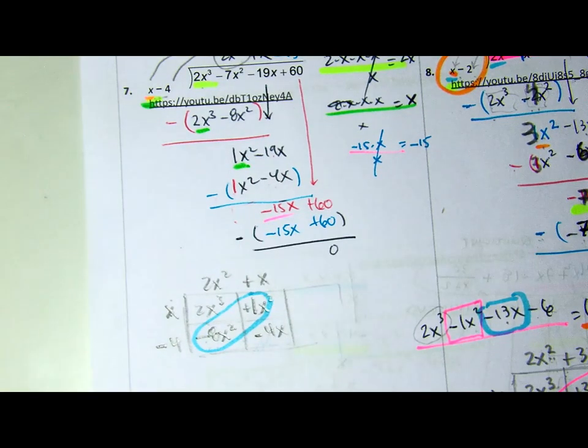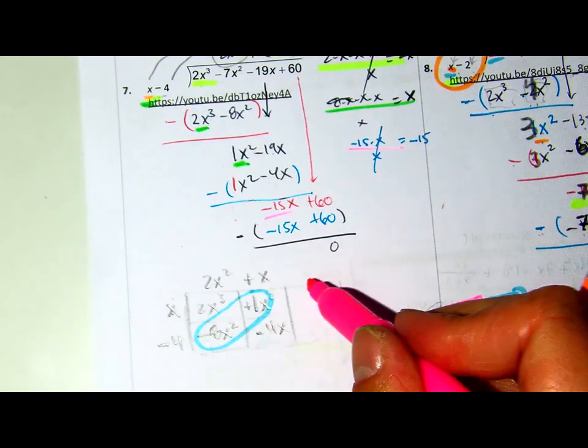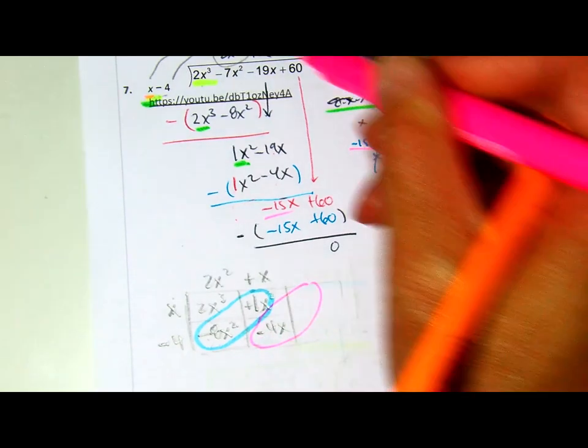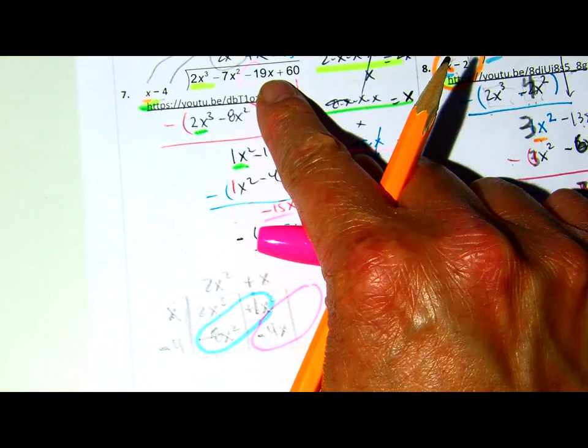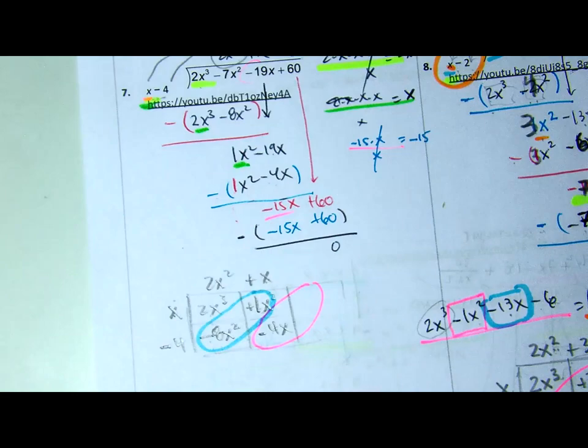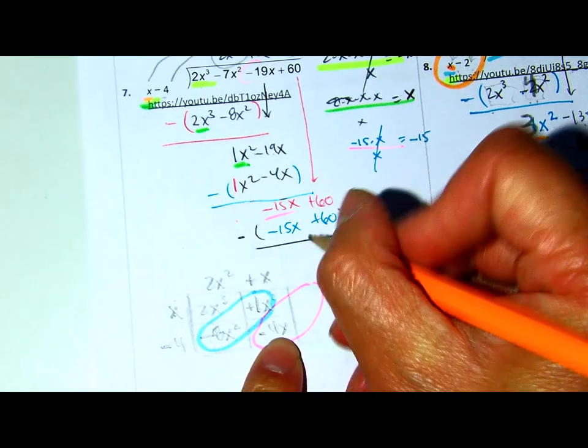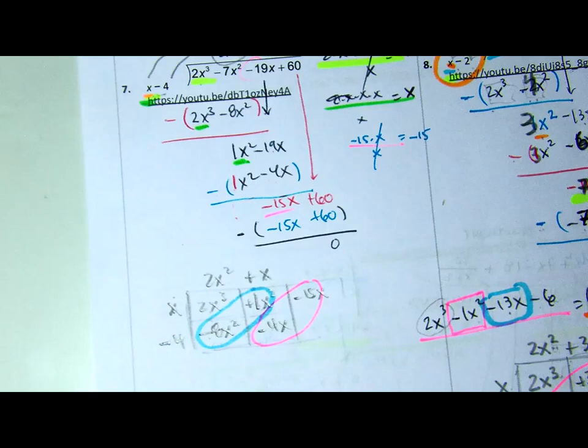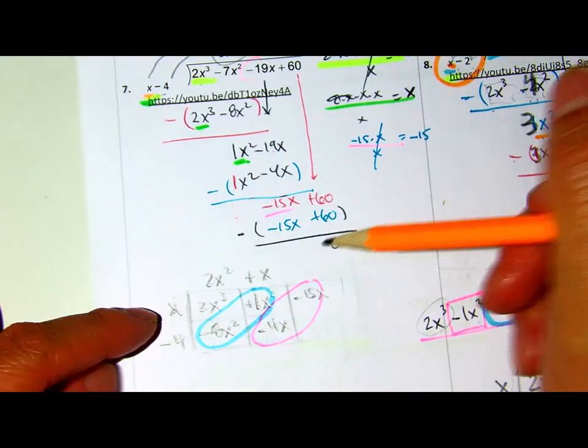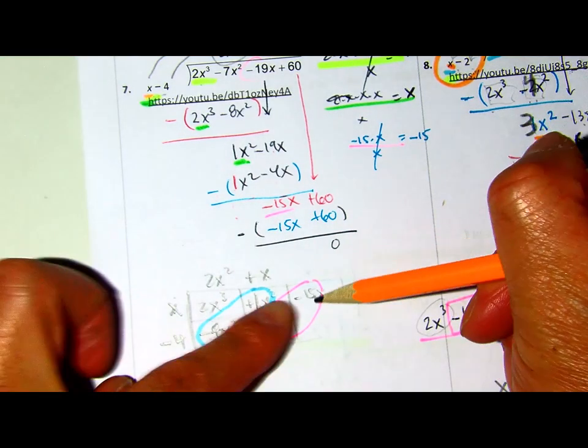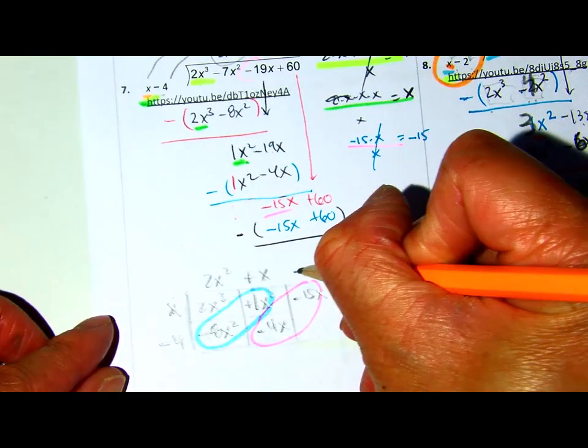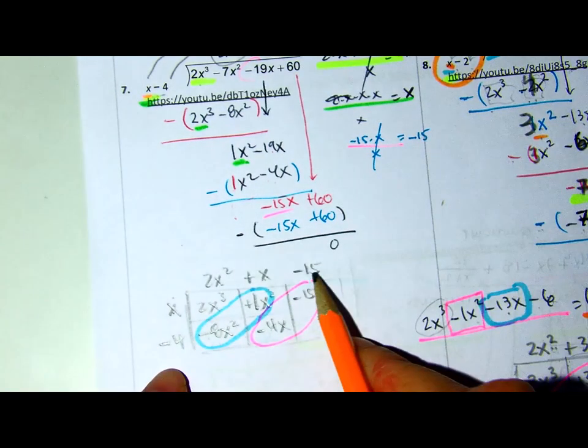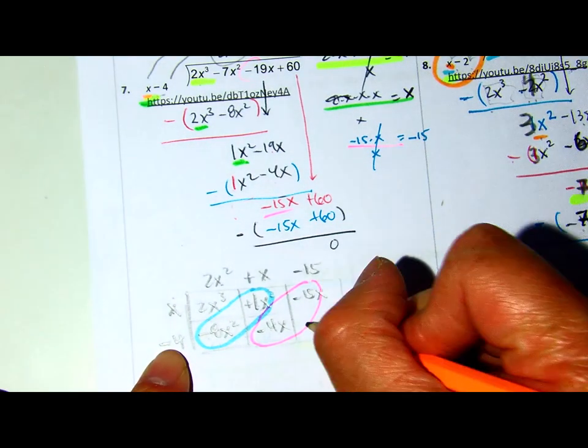So, I'm gonna do the same thing. These two have to equal negative 18x. So, negative 4x minus 15x. And then, I just need to figure out this one. So, that'll be negative 15. And negative 15 times negative 4 is 60.